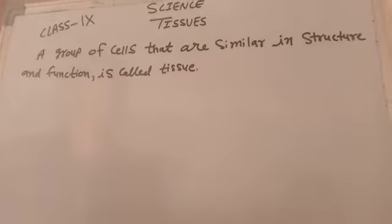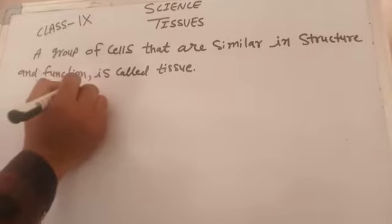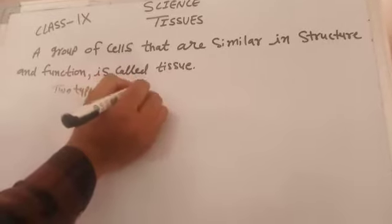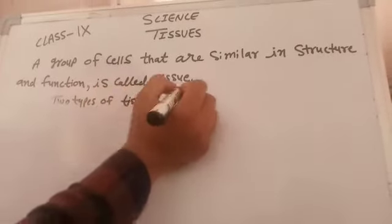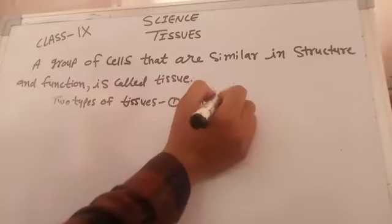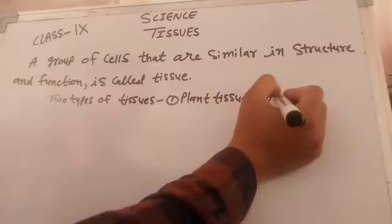There are two types of tissues: first, plant tissues, and second, animal tissues.